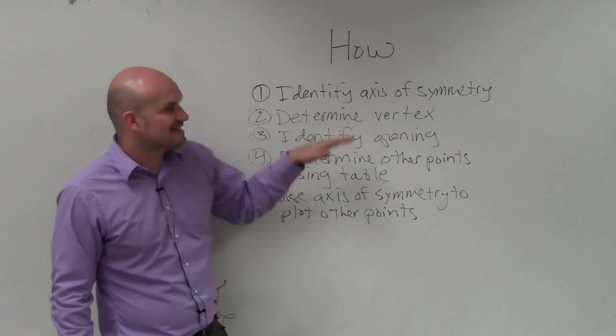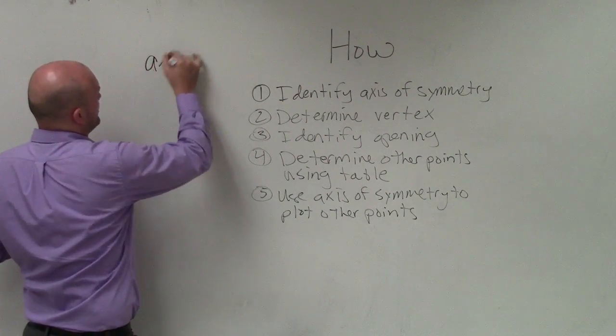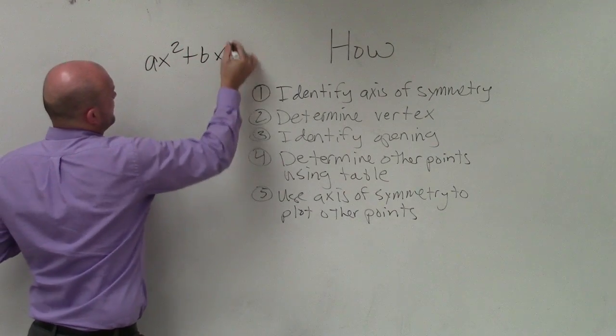Basically, the first thing we want to do is identify the axis of symmetry. So when we have a quadratic in standard form, remember, it's ax² + bx + c.